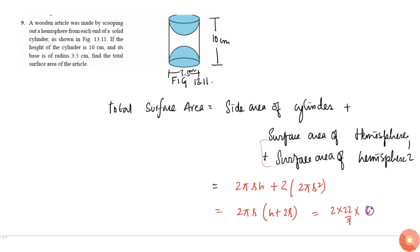So now this becomes 2π × 3.5 × 17. Since 2 × 3.5 is 7, this becomes 7π × 17, which simplifies to...